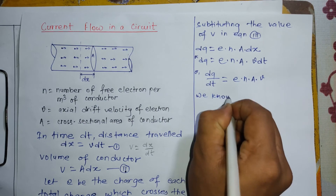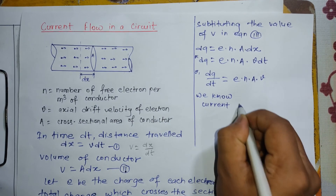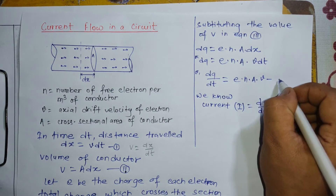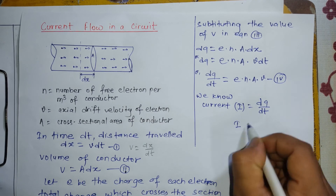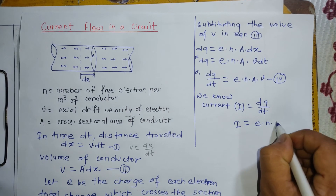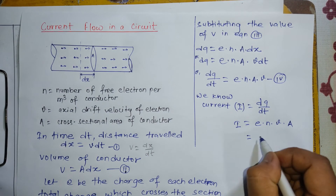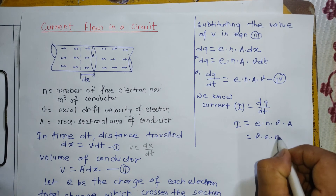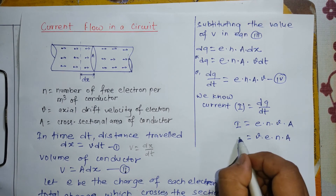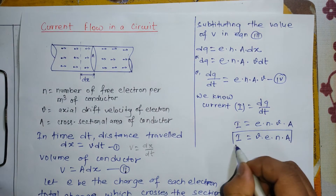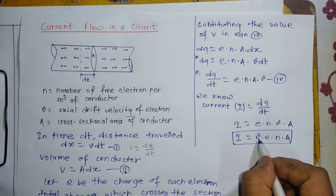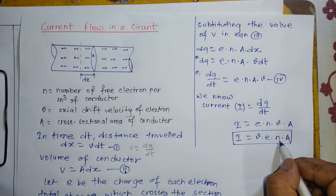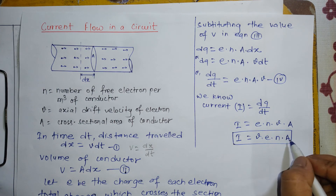We know that current I is equal to dQ/dt. So I = e·n·v·A. This is the current flowing through a conductor, where v is the axial drift velocity, e is the electronic charge of an electron, n is the number of free electrons per unit volume of the conductor, and A is the cross-sectional area of the conductor.